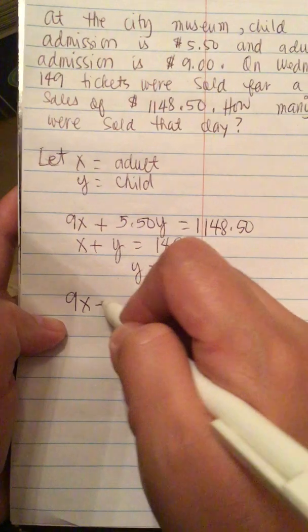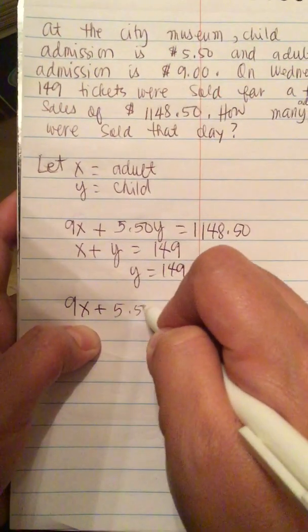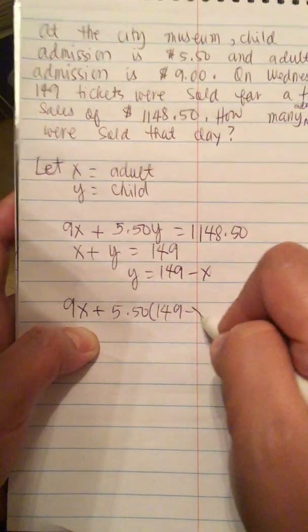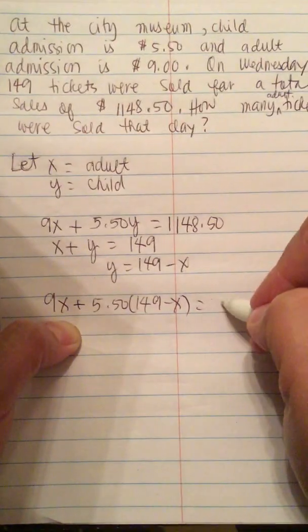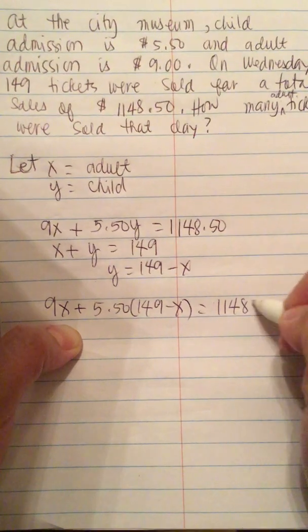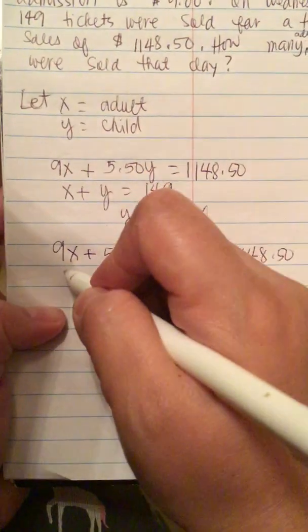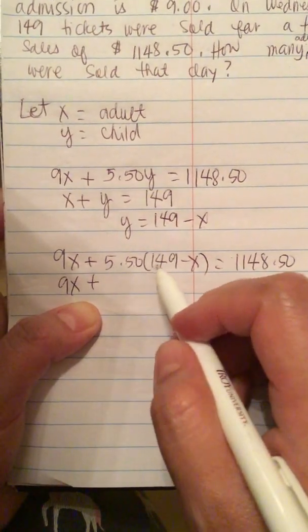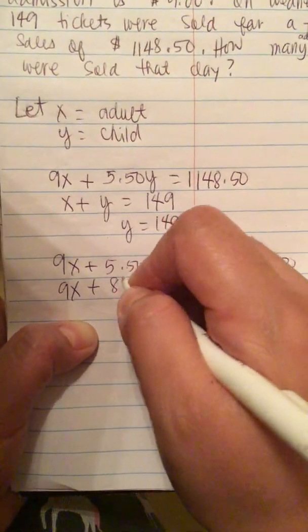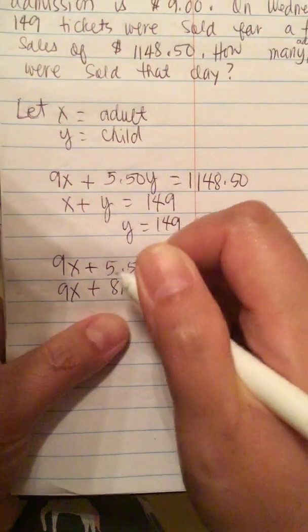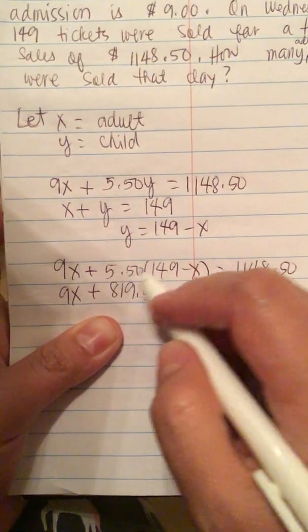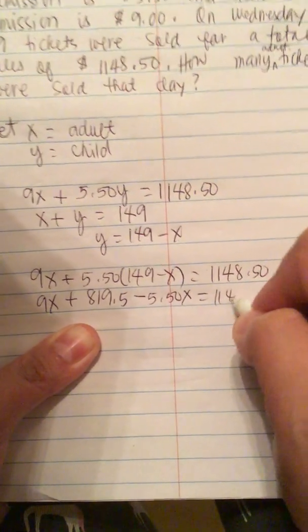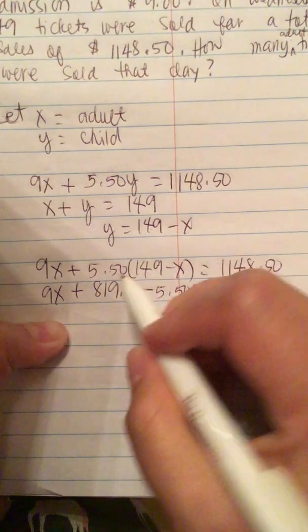9X plus 5.50 times Y, or Y equals 149 minus X, equals $1,148.50. We have 9X plus 5.50 times 149 minus X, which gives us 9X plus 819.50 minus 5.50X equals $1,148.50.